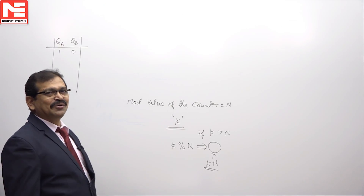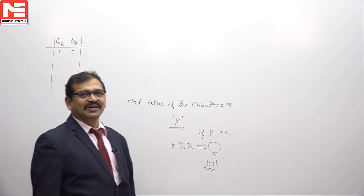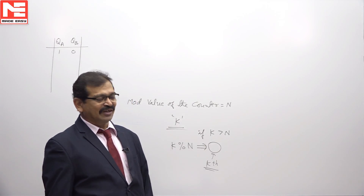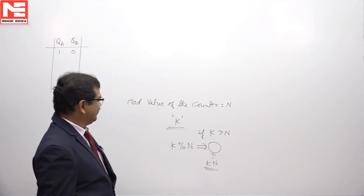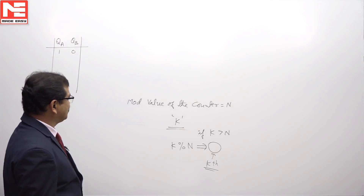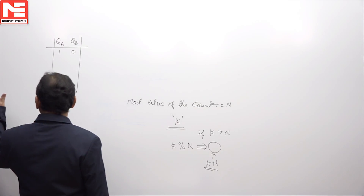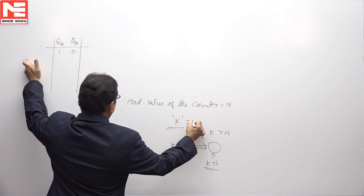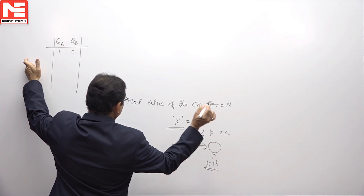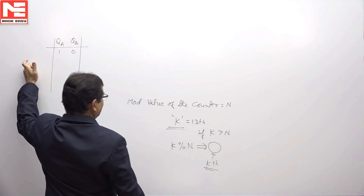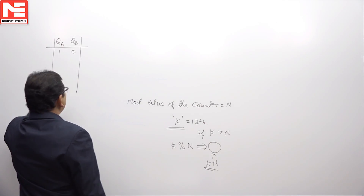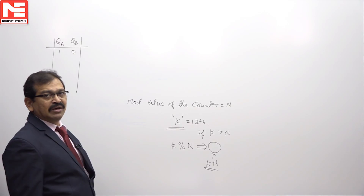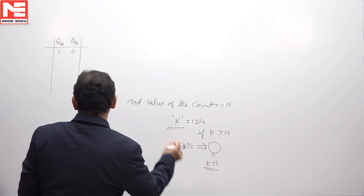Based on this question, we first need to recognize what the mod value of the counter is. After that, we can determine the content of the counter after the 13th clock pulse, using the circuit connections available.